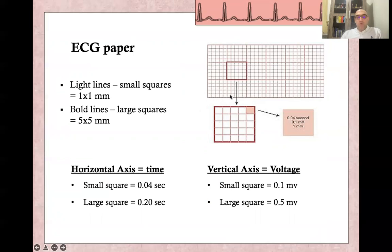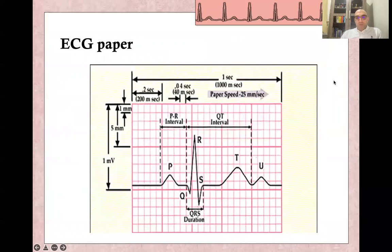The horizontal axis represents time: each large square equals 0.2 seconds, and five large squares equal one second. We record the PR interval — from the beginning of the P wave to the beginning of the QRS complex — as well as the QT interval, from the beginning of the QRS complex to the end of the T wave. Both represent time measurements.